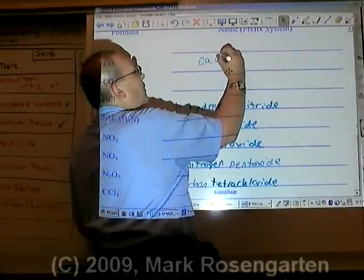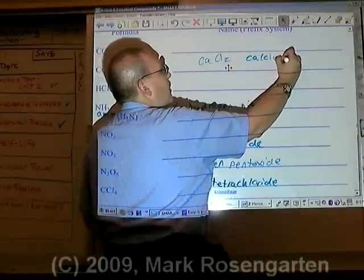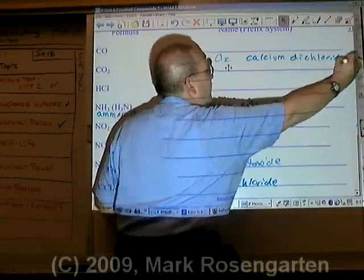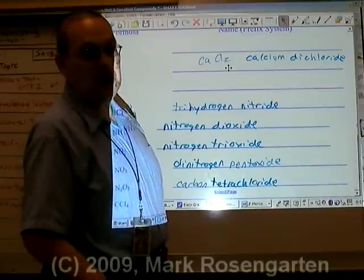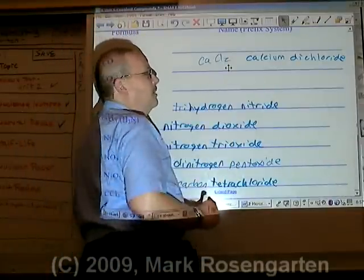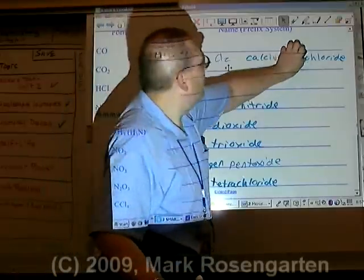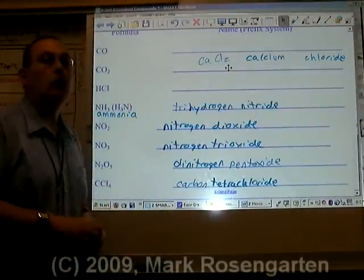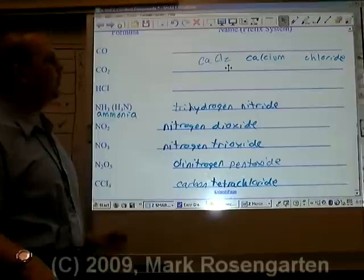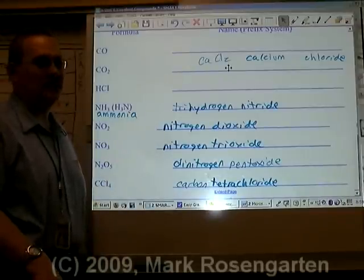You might be tempted to call CaCl2 calcium dichloride — don't do it! This is just calcium chloride. When you do ionic compounds, you do not use the prefix system, only the stock system. If you were to write calcium dichloride for this, it's just not going to be a pretty sight. Thank you.